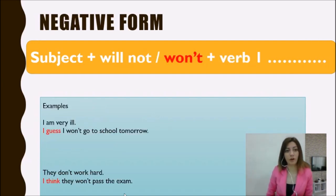Look at the negative form. Firstly we put subject and then we put will not or won't and then we put verb one. Let's look at the example: I'm very ill, I guess I won't go to school tomorrow. And look at the other example: They don't work hard, I think they won't pass the exam.